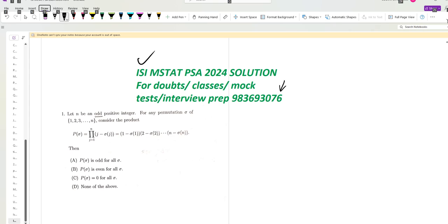First question: Let n be an odd positive integer. For any permutation sigma (1, 2, 3, ..., n), consider this product. Then what is P of sigma? To analyze the product, we must evaluate the possible values of j minus sigma j.